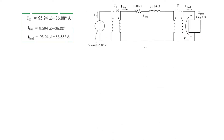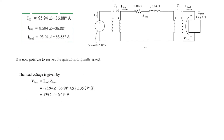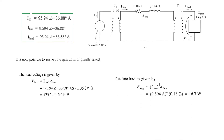Now we find the load voltage and line loss. V_load = I_load × Z_load, using I_load from the calculation and |Z_load| = 5 ∠36.87°, giving the load voltage. For line loss: I_line² × R_line = I_line² × 0.18 = 16.7 watts.